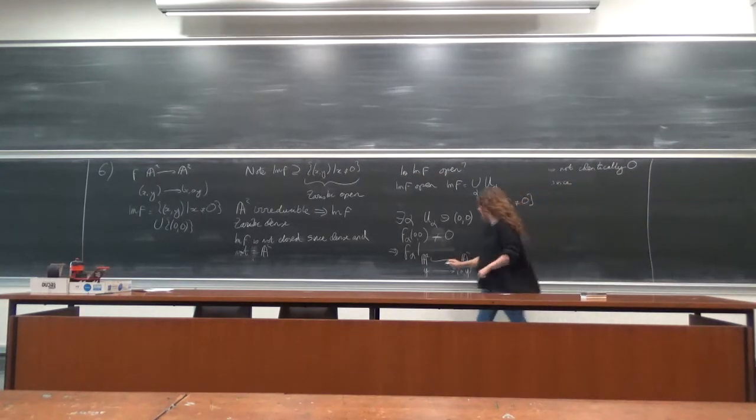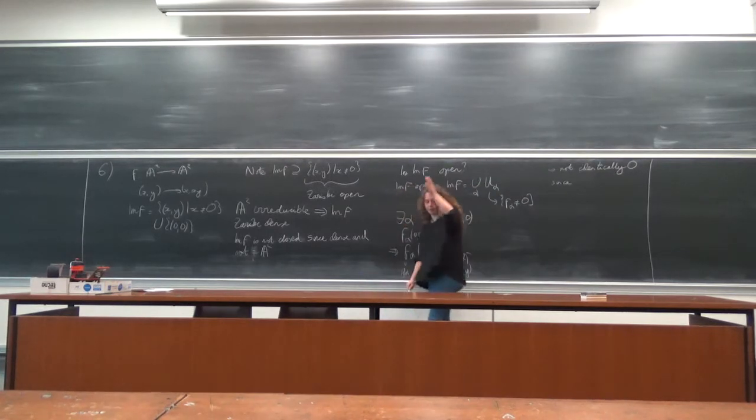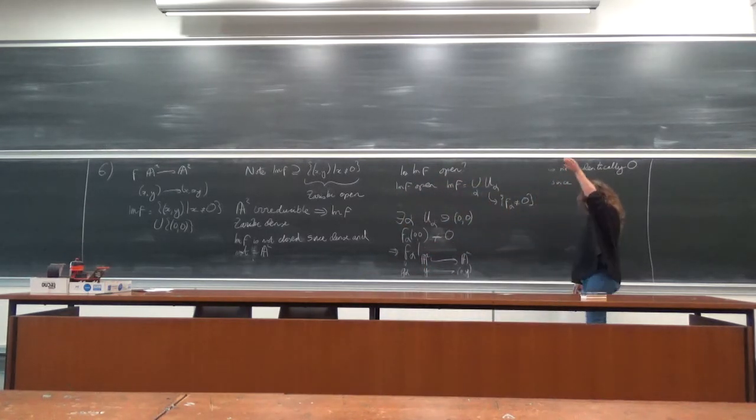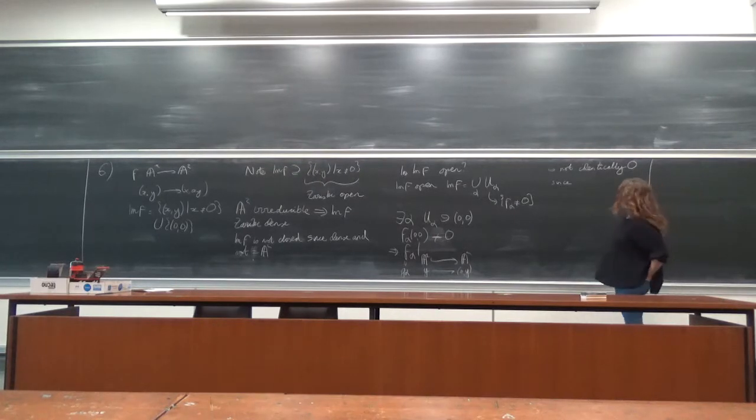So let's call this g_alpha. So this g_alpha is the restriction of f_alpha to the coordinate plane A¹.